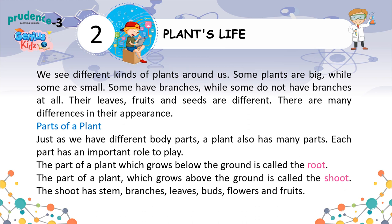Parts of a plant. Just as we have different body parts, a plant also has many parts. Each part has an important role to play. The part of a plant which grows below the ground is called the root. The part of a plant which grows above the ground is called the shoot. The shoot has stem, branches, leaves, buds, flowers and fruits.